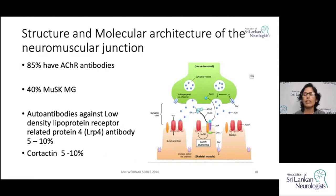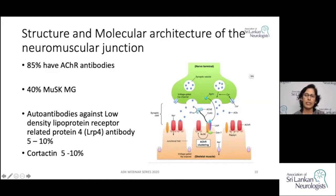That is how in a normal person the neuromuscular junction functions. In Myasthenia Gravis, there is antibody formation against acetylcholine receptors. In a normal person, the released acetylcholine is immediately broken down by acetylcholinesterase, which is complexed with the collagen Q molecule on the MuSK receptors, so that acetylcholine is immediately removed.